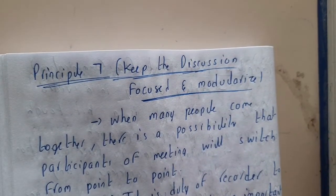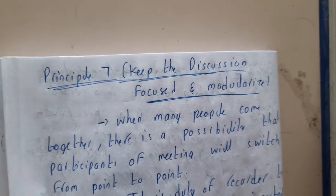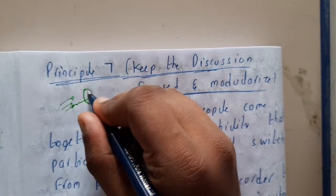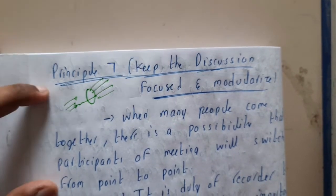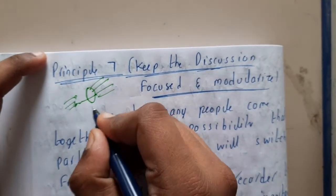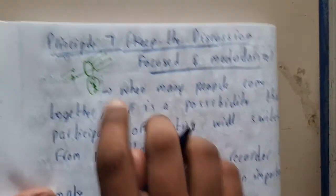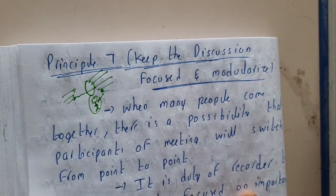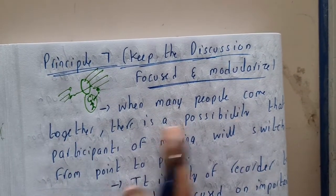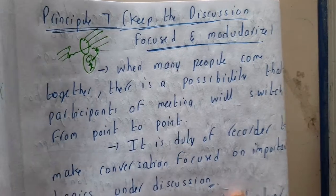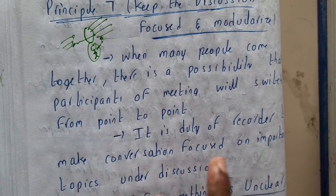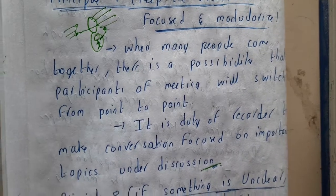Principle seven is to keep the discussion focused and modularized. Sometimes communication with a client can loop — you start discussing requirements and then drift to unrelated topics instead of staying on the main objective. This is where the recorder appointed in principle five plays a key role: it is their duty to steer the discussion back to important topics. When many people are together, participants often switch from point to point, so the recorder must keep the conversation focused.